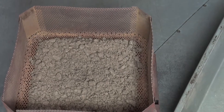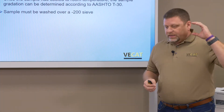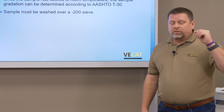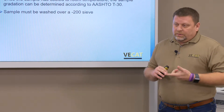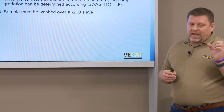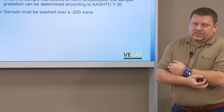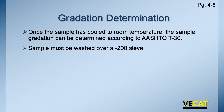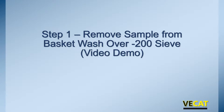Now we have our asphalt content from the furnace burn. The ticket literally calculates the asphalt content for you — it shows initial weight, weight loss, and gives you an actual asphalt content. Once the sample has cooled to room temperature, we're ready to do our gradation following AASHTO T30. The first step is to remove the sample from the basket and wash it over the minus 200 sieve.